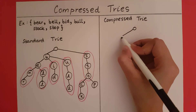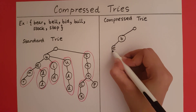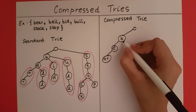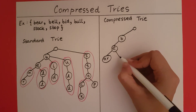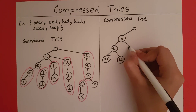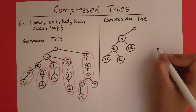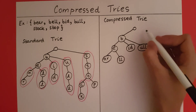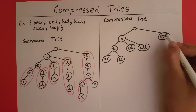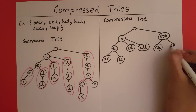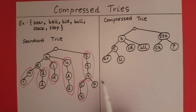I have the root, then B, then E. And instead of A and then R, I can use AR. Then I have B, E, and instead of L and L, I can have LL. Then I have BID. Now on this side I have STO which branches out into CK and P. So this is going to be my compressed trie representation of the same set of strings.